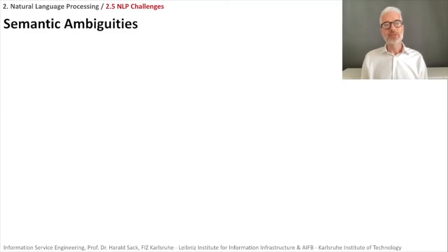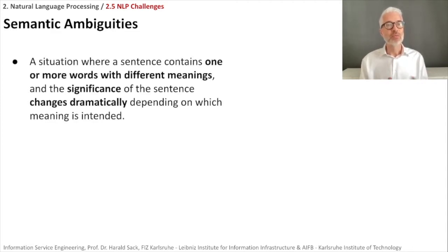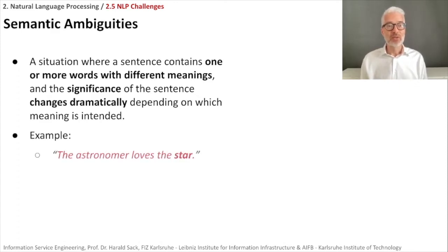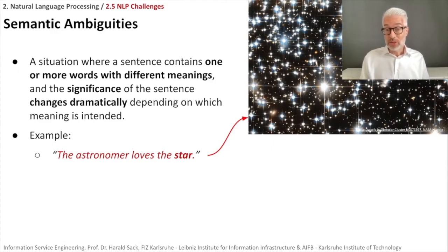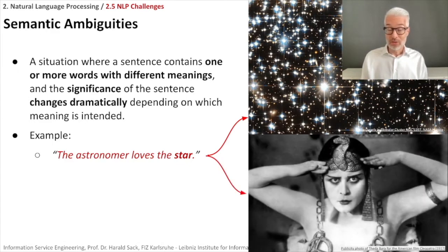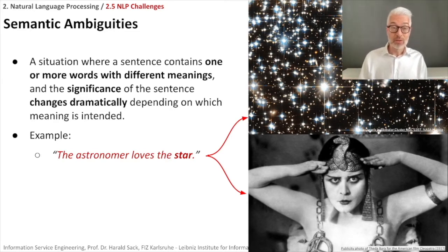One step further: semantic ambiguities depend on the meaning of a single word but then determine the meaning of an entire larger structure. You have a situation where a sentence contains one or more words with different meanings, and the significance of the sentence changes dramatically depending on which meaning is intended. Example: 'The astronomer loves the star.' An astronomer looking at the starry night might love a specific star, but it could also mean the astronomer has fallen in love with a movie star — 'star' having two different meanings changes the entire sentence.